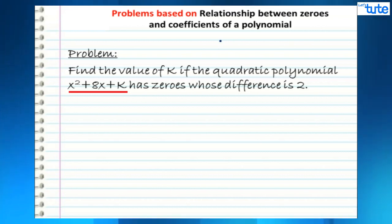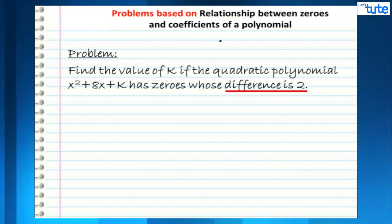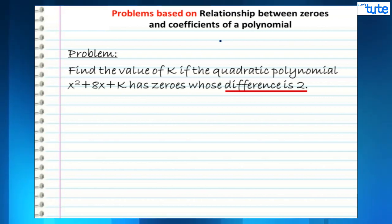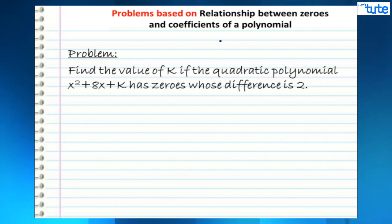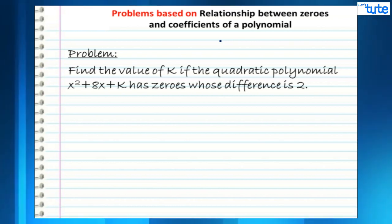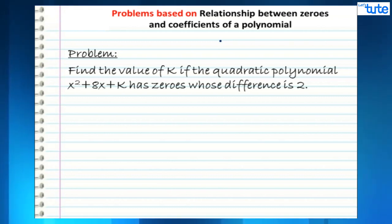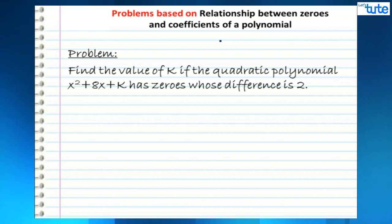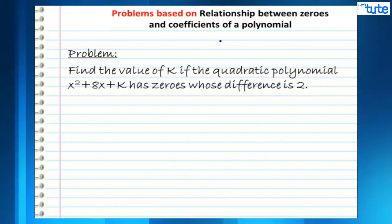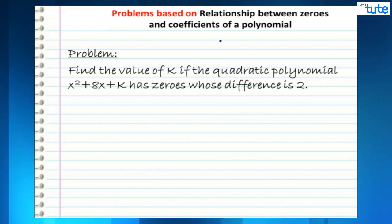The quadratic polynomial is x² + 8x + k. They have given us a quadratic polynomial and the information that the difference between the two zeros is 2. That means if alpha is the bigger zero and beta is the smaller zero, then alpha minus beta equals 2. Using these two pieces of information we will find the value of k.